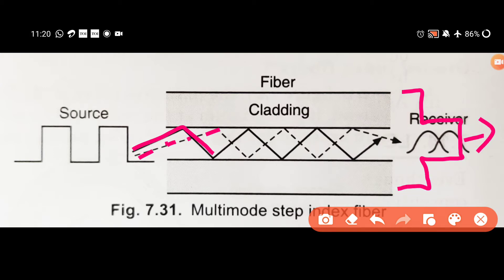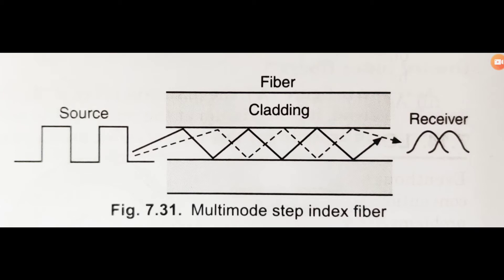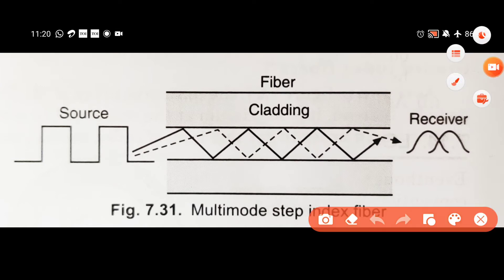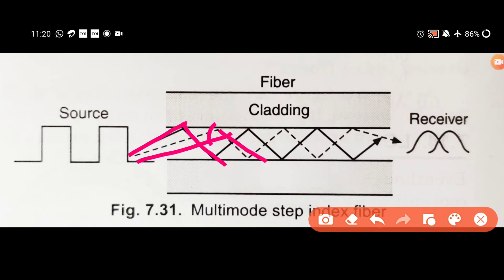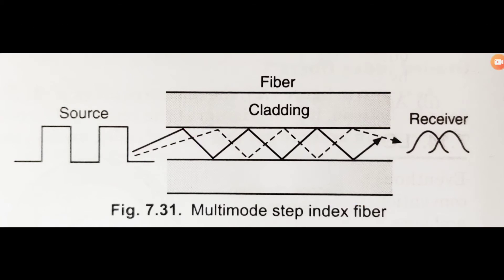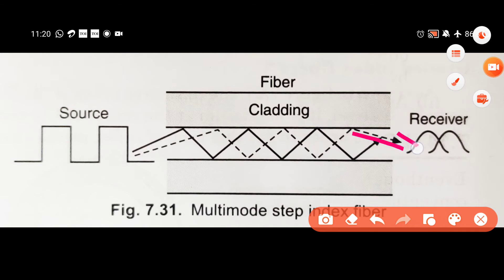This is the first condition. When two light signals are present, transmission can be done through the core. The signals have different incident angles. Transmission can be easily done with two signals, and the receiver side can receive them.